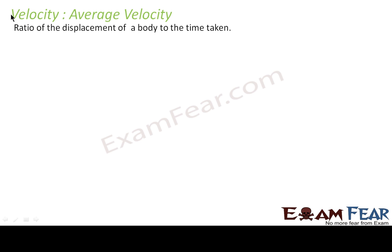Average velocity by definition is the ratio of the displacement of a body to the time taken. That means it basically shows how the displacement changes with time. In this slide we will see how to calculate the magnitude of average velocity as well as the direction of average velocity in two dimensions.